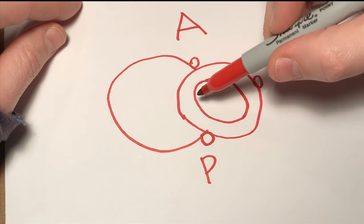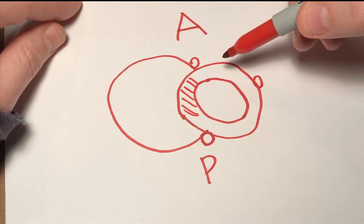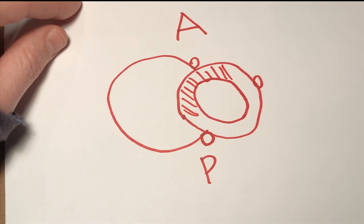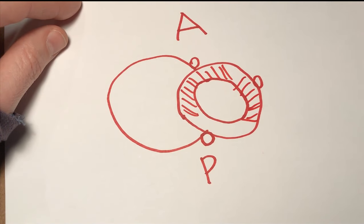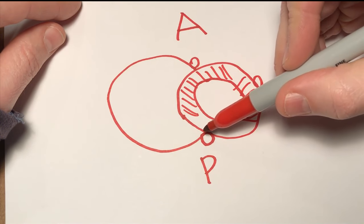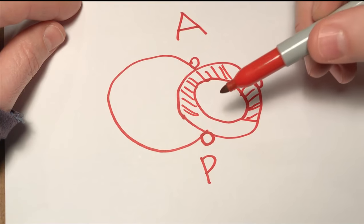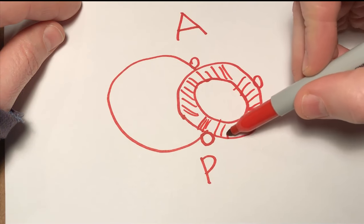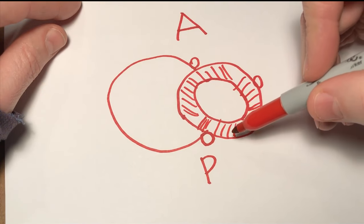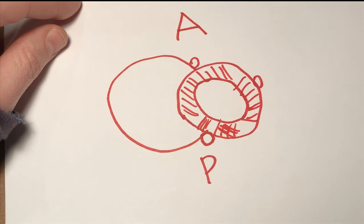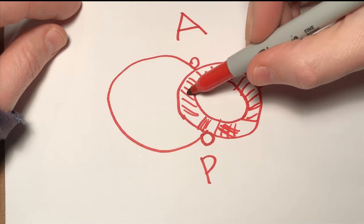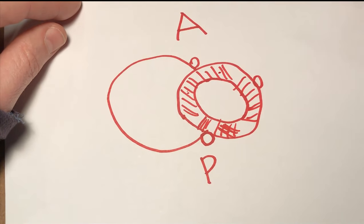The LAD running in the anterior interventricular groove is going to supply the anterior two-thirds or so of the septum and part of the anterior wall of the left ventricle. The circumflex is going to supply the lateral wall of the left ventricle with vessels called obtuse marginal branches. The PDA, usually a branch of the right coronary artery, is going to supply the inferior third or so of the septum and part of the posterior wall of the left ventricle — technically it's the posterior left ventricular branch of the right coronary artery that supplies this part of the left ventricle. The branches of the LAD you need to know are the septal branches, which supply the septum, and the diagonal branches, which supply the anterior aspect of the left ventricle.